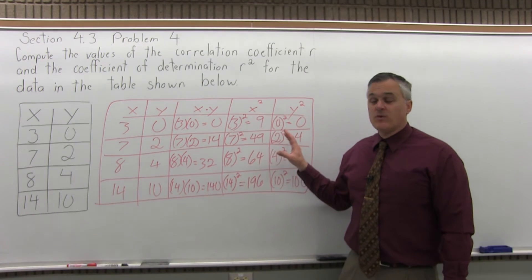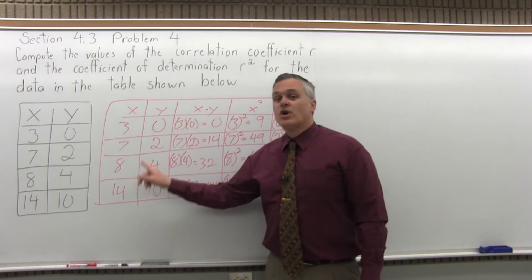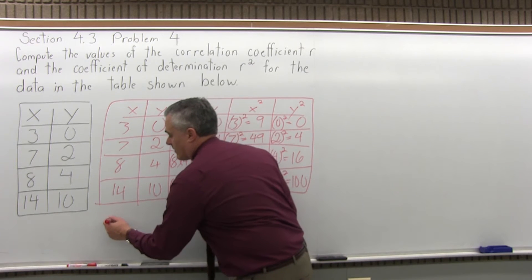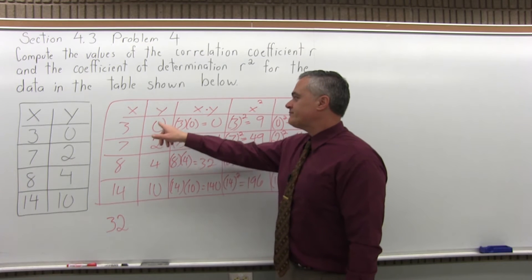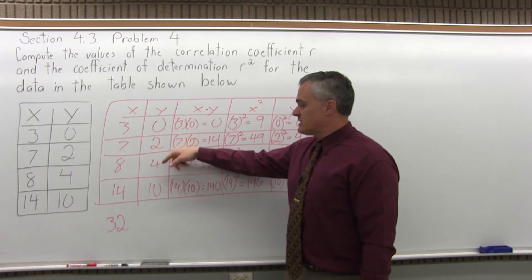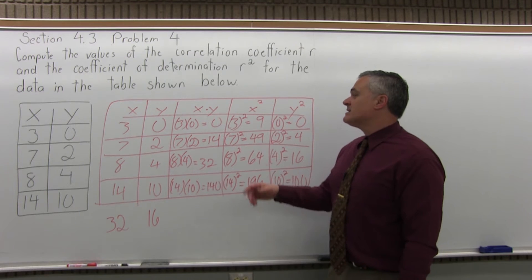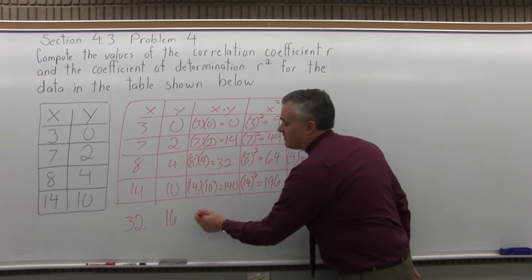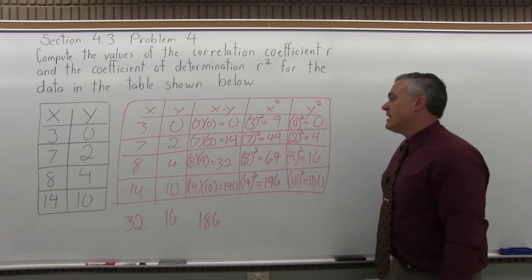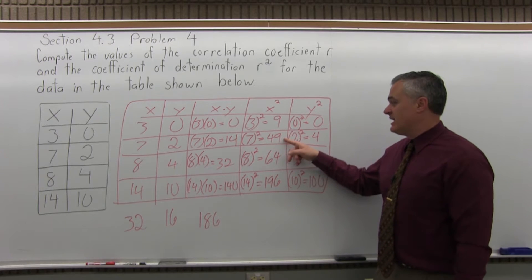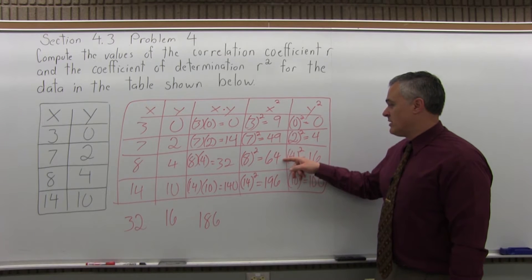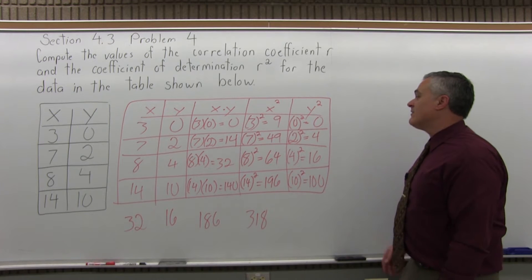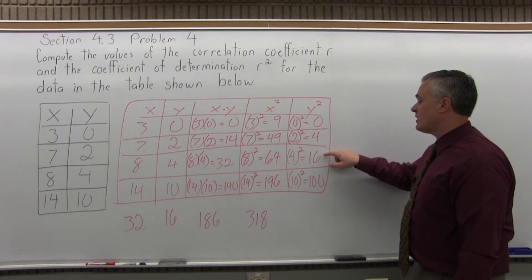Now the chart is completely filled out. What we have to do now, before we start filling in the formula for R, is get a total of every column. For the values of x, 3 plus 7 is 10, 10 and 8 is 18, 18 and 14 is 32. The values of y get a total: 0 plus 2 is 2, 2 and 4 is 6, 6 and 10 is 16. Next, x times y: 0 and 14 is 14, 14 and 32 is 46, 46 and 140 is 186. x squared: 9 and 49 is 58, 58 and 64 is 122, 122 and 196 is 318. And finally, y squared: 0 and 4 is 4, 4 and 16 is 20, 20 plus 100 is 120.